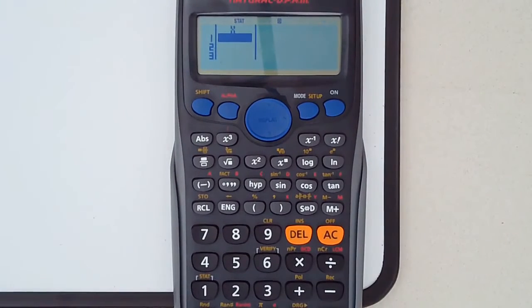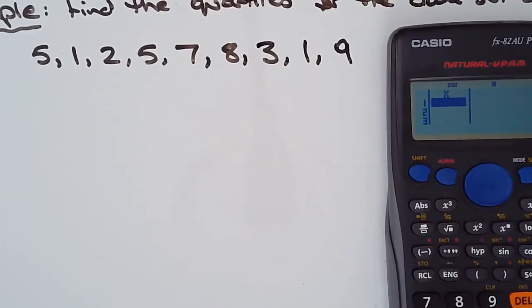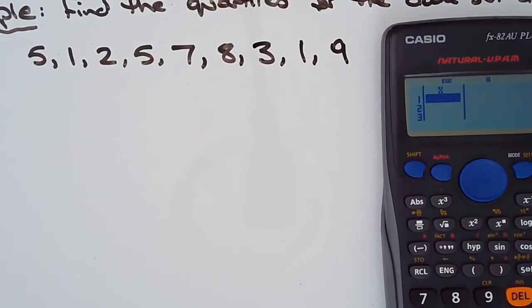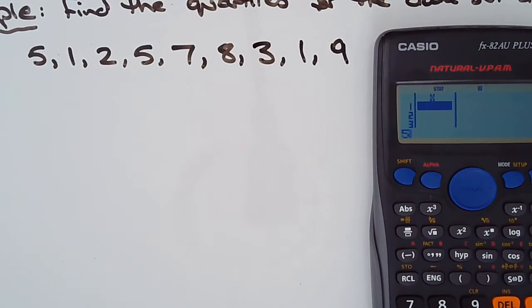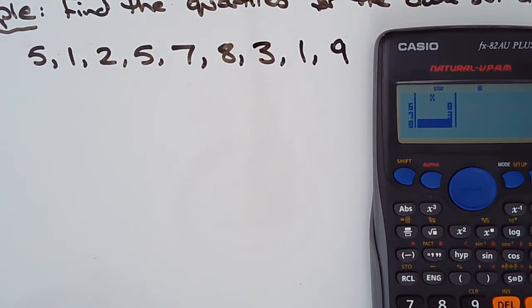Then you've got a column there, like a spreadsheet-type column, and we're going to enter in the scores. After each value, just press equals: 5, 1, 2, 5, 7, 8, 3, 1, and 9.